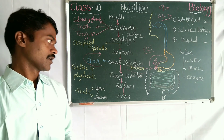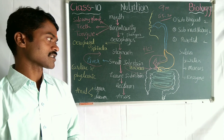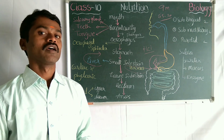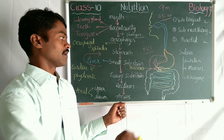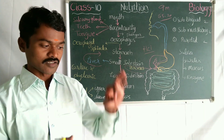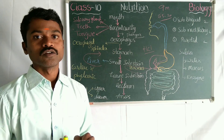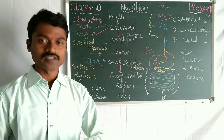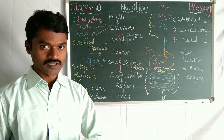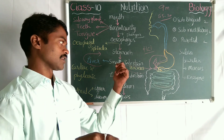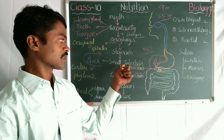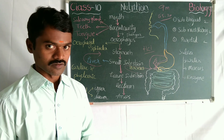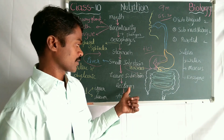The large intestine has a length of 1.5 meters. The reason it is called the large intestine is its diameter: the small intestine has a diameter of 2.5 centimeters, while the large intestine has a diameter of 4 to 5 centimeters. So it is called large based on diameter, not length — the small intestine is actually longer at nearly 7 meters.